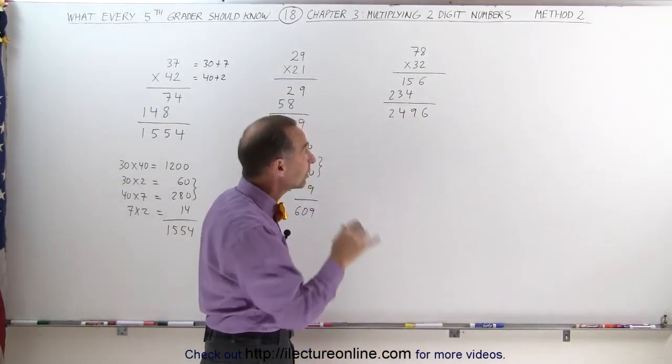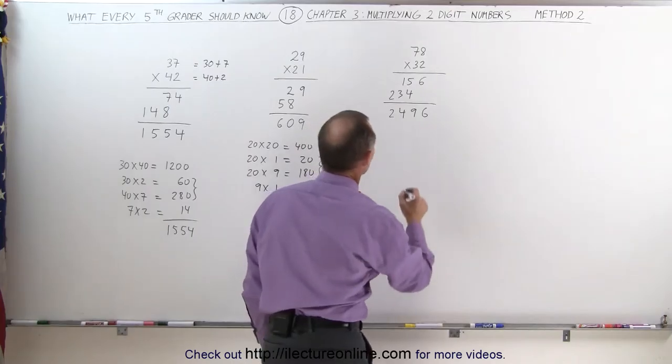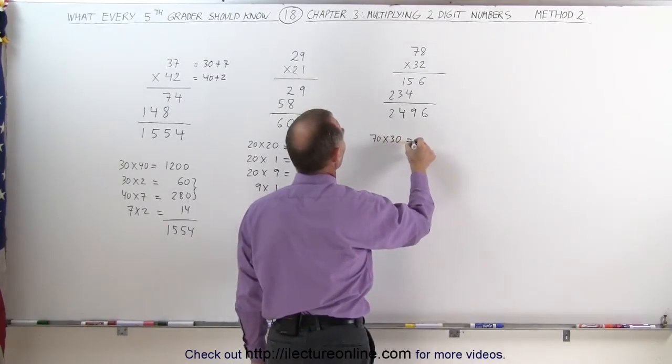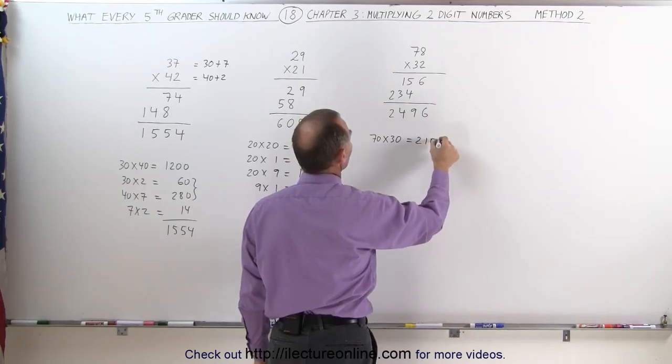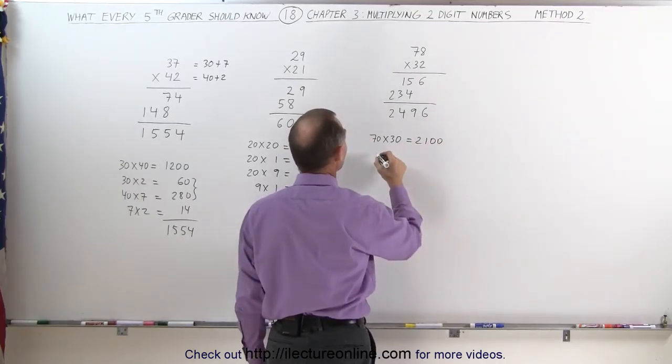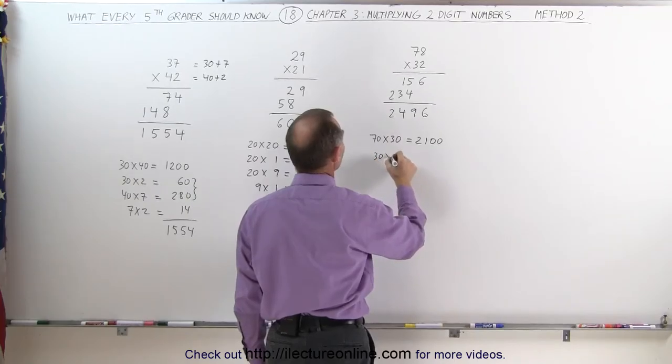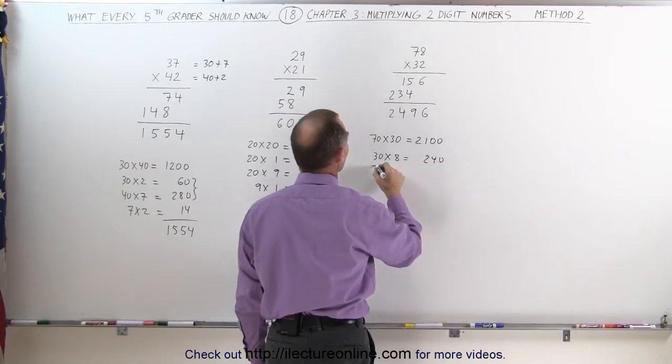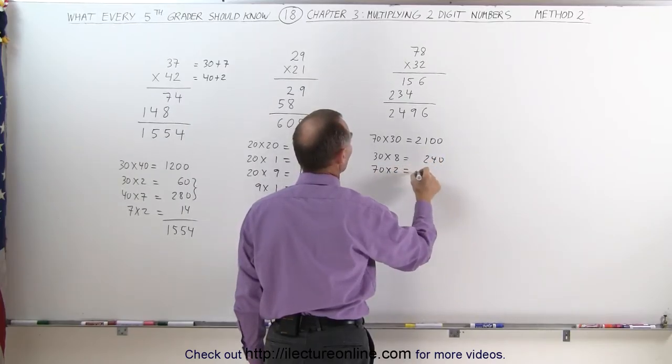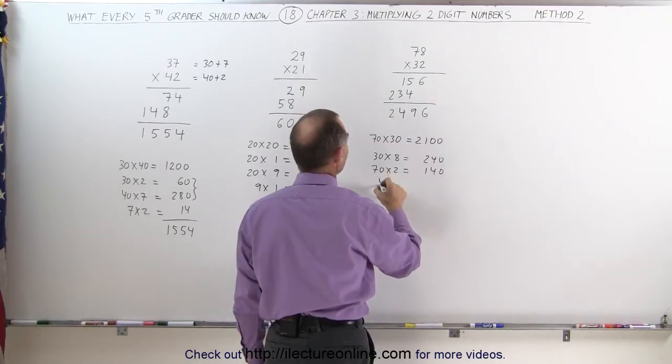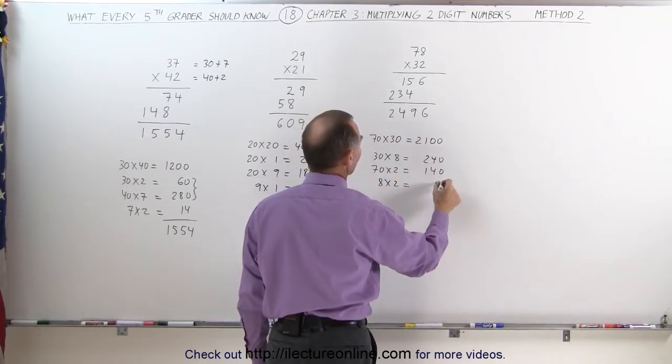How could you do that differently? With technique 2, method number 2, you can do the following: 70 times 30, that's equal to 2100, 3 times 7 is 21, add two zeros. Then you go 30 times 8, which is 3 times 8 is 24, add a 0. And you go 70 times 2, which is 140. Finally, it's 8 times 2, which is 16.